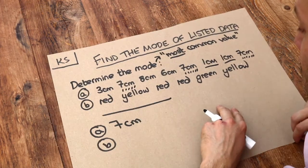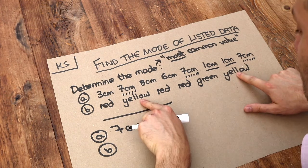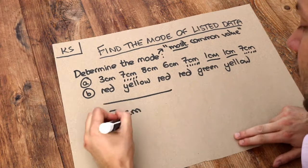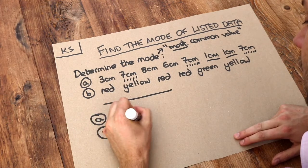So what is the most common value? Well we can see that yellow occurs twice, green only appears once, but red occurs three times. That's the most common value and therefore the mode here is red.